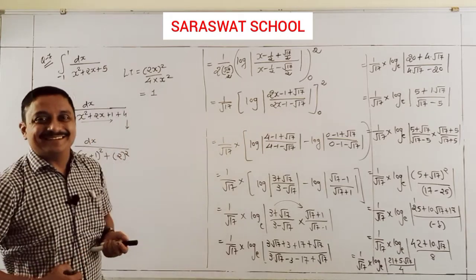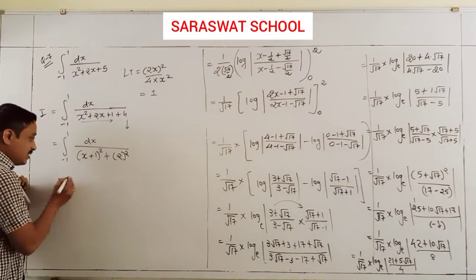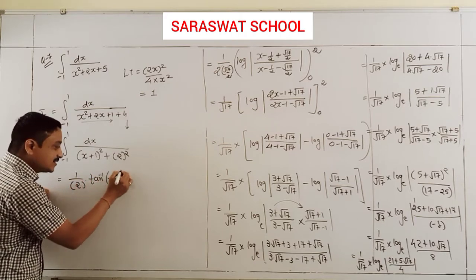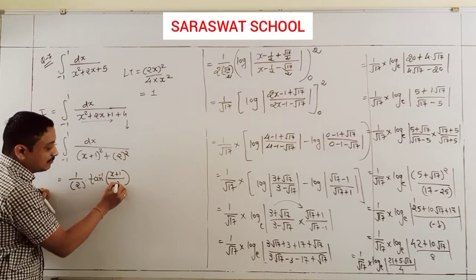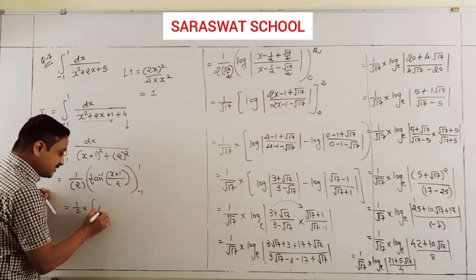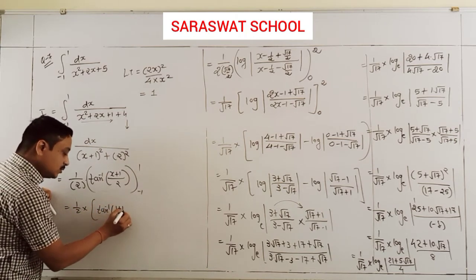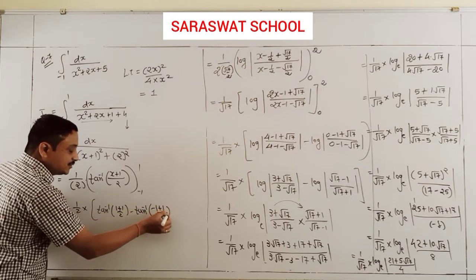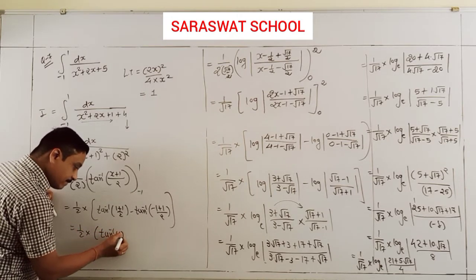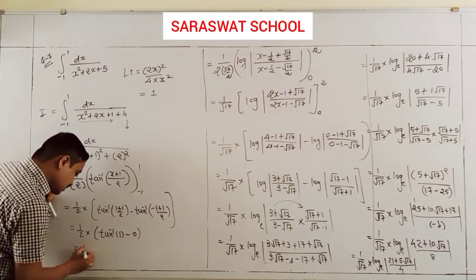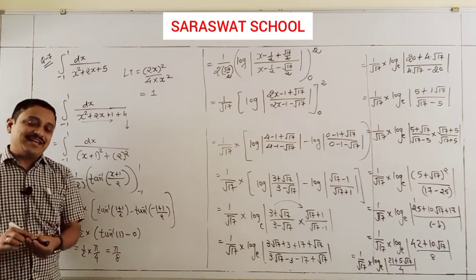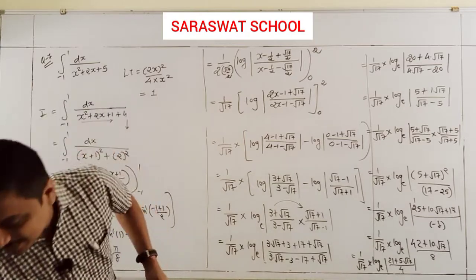The integral from -1 to 1 becomes dx/((x+1)² + 2²). Using the formula ∫dx/(x² + a²) = (1/a)tan⁻¹(x/a), we get (1/2)tan⁻¹((x+1)/2) with limit -1 to 1. Applying limits: (1/2)[tan⁻¹(2/2) - tan⁻¹(0/2)] = (1/2)[tan⁻¹(1) - 0] = (1/2)(π/4) = π/8.